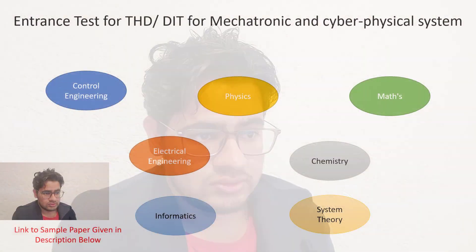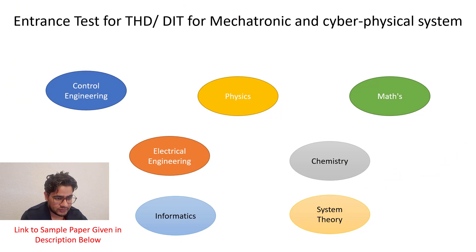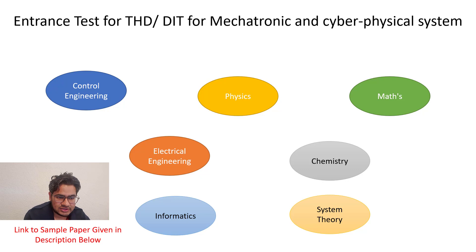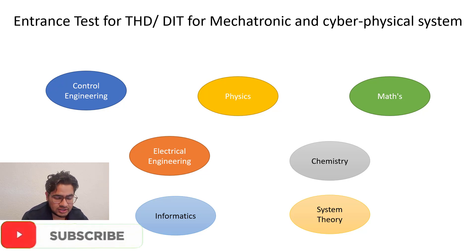So the first question: what is the format of the paper and what subjects will be asked? There are seven sections in the paper: Control Engineering, Physics, Maths, Electrical Engineering, Chemistry, Informatics, and System Theory.